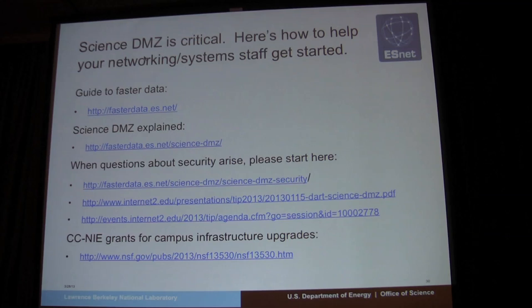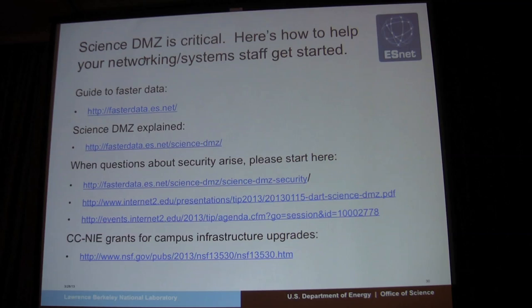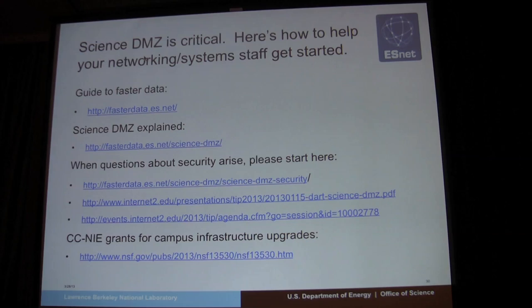The take-home point is that the Science DMZ architecture is really critical. You can help get a change initiated on your home campus by directing the relevant folks to the Faster Data website where we explain Science DMZ. When the inevitable security questions arise, you can direct them to material on the web that explains the objective and the security controls we propose. If you work for a U.S. university, you might be interested in getting NSF funds to pay for this kind of upgrade. The grant deadline is next week, so it may be too late for this round, but I'm sure there will be successive rounds of funding so that hundreds of U.S. campuses can enjoy the benefits of this architecture.